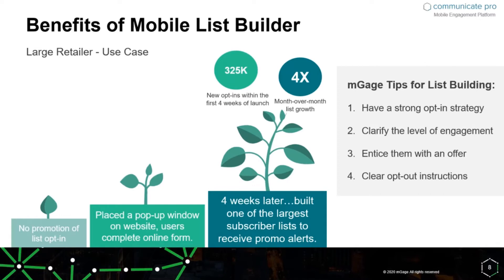The results of this deep, strategic thinking on how to target and grow the list — four weeks later, the stats from this case study show they had 325,000 new opt-ins during those first four weeks, with four times month-over-month growth. That's really massive. It probably didn't require a massive amount of resource on the back end, but a well-implemented strategy enabled them to massively grow their list of users they can reach out to.